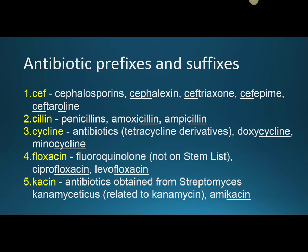KACIN is an antibiotic stem obtained from Streptomyces kanamyceticus, related to kanamycin. We have to be careful here: kacin appears in amikacin and tells us it's an antibiotic, but it doesn't necessarily tell us the specific class. Amikacin happens to be an aminoglycoside, but unlike CEF-, CILLIN-, CYCLINE-, and FLOXACIN-, the KACIN stem may not reliably identify the antibiotic class.